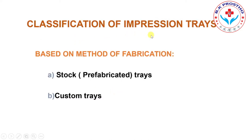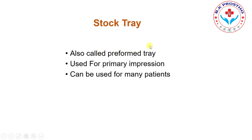Classification of Impression Trays: based on methods of fabrication, trays are classified as Stock Trays and Custom Trays. Stock Trays are also called Preformed Trays, and are basically used to make a preliminary or primary impression for making a diagnostic cast. They can be used for many patients. If trays are made of metal alloy, they can be reused after sterilization. If made of plastic, they can be disposed of after use.